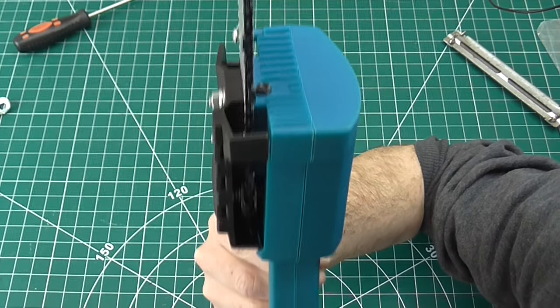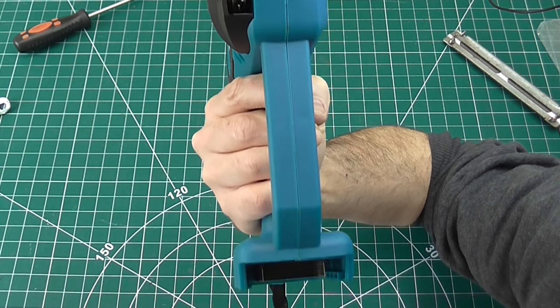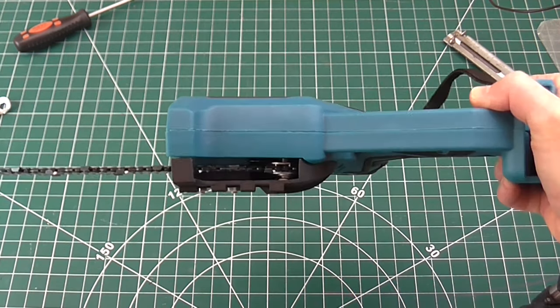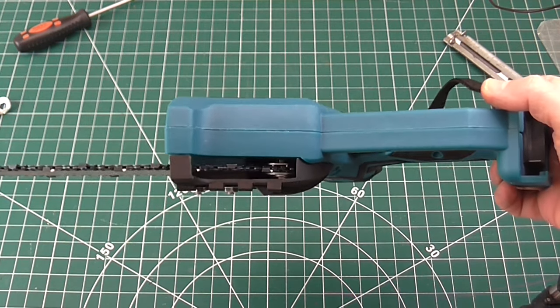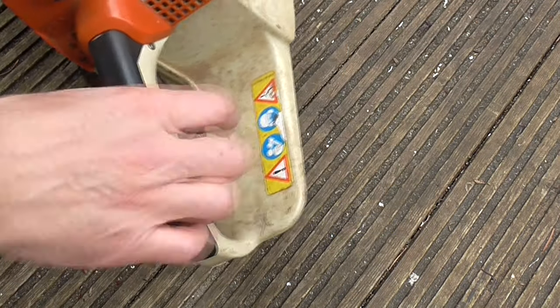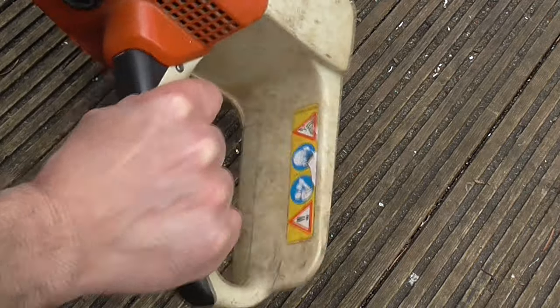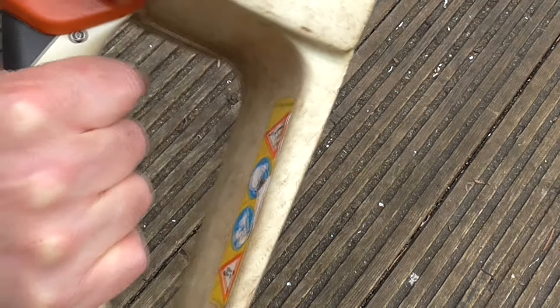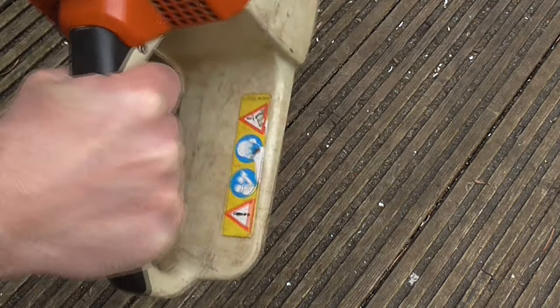The chain is also directly in line with my knuckles, and there's no extended guard on the handle for extra protection. This is a basic safety feature that almost all saws have, and I can't imagine it would cost any more to add.